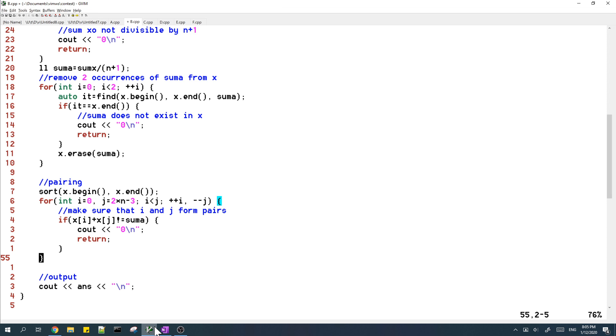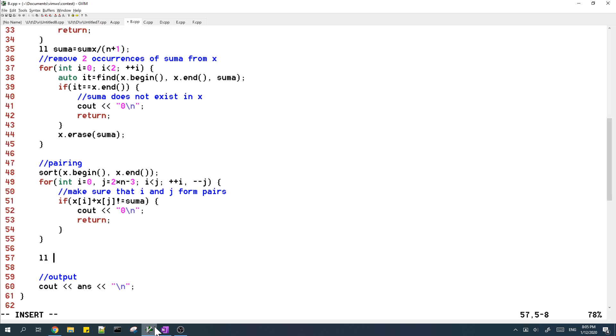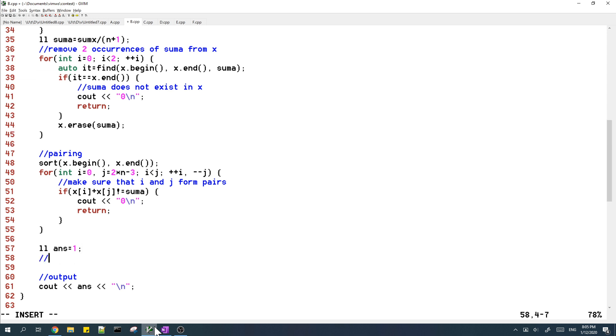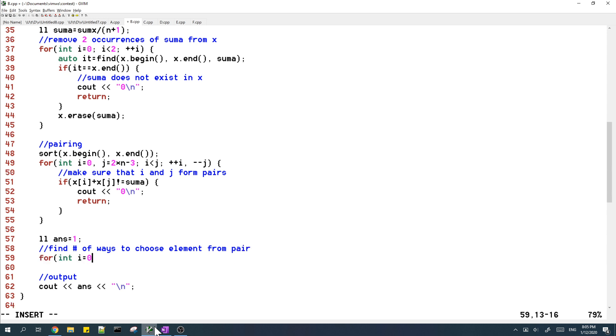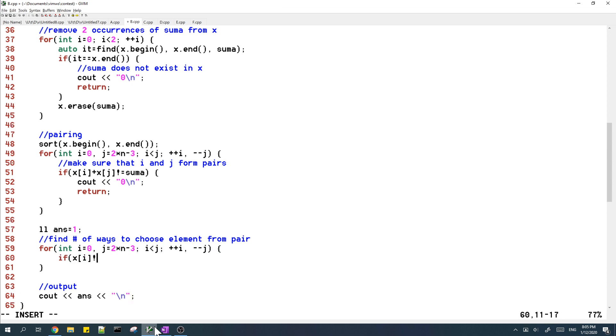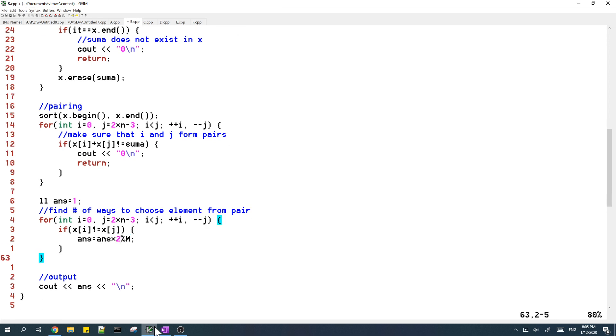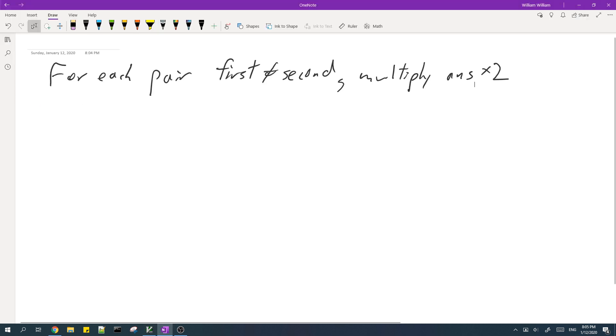So in the code here, we just go through all n-1 pairs and check if they're the same or not. And if they're not the same, then we multiply the answer by 2.